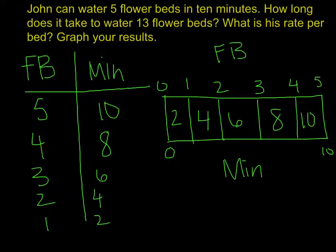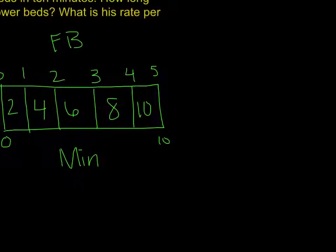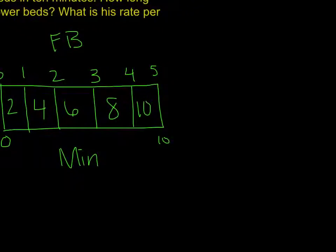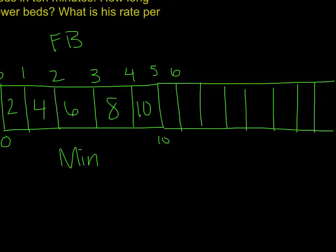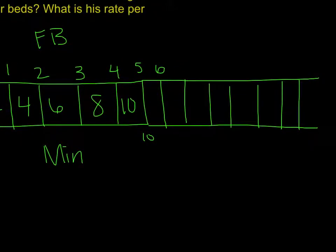So what I would do to finish, I would actually extend my tape diagram. Let me move it over here. So I'm going to extend it so that I can get to 13 flower beds. So 6 flower beds, 7, 8, 9, 10, 11, 12, and 13.